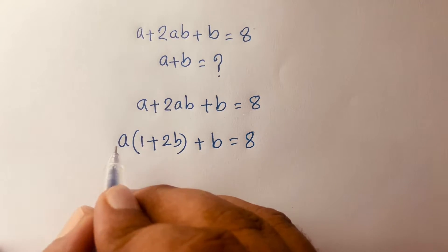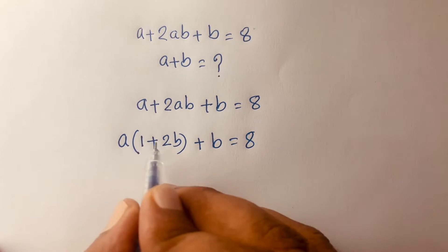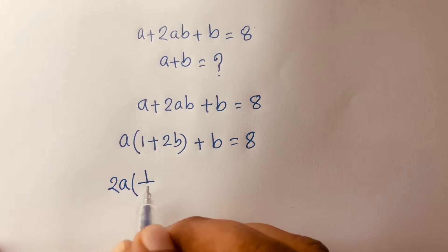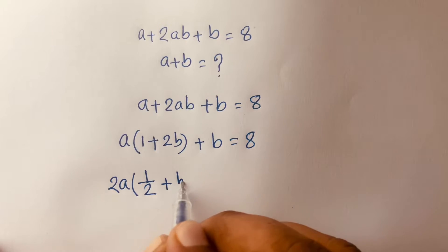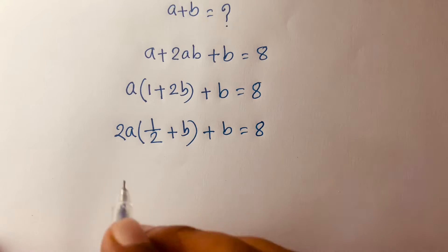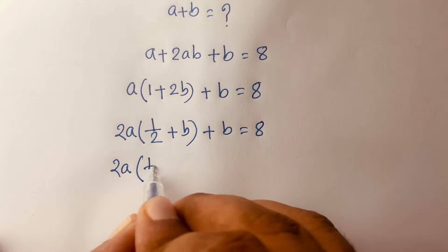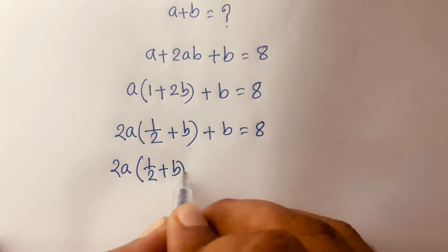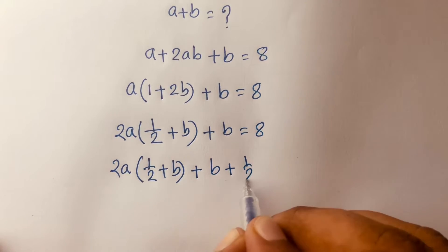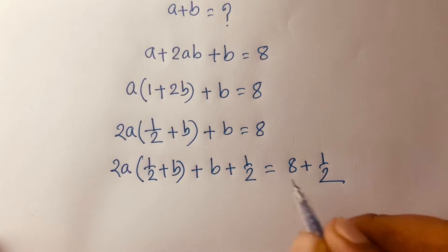Then I can see that 2 is common, so it will be 2 times [a times (1/2 plus b)] plus b is equal to 8. Then I add 1/2 to both sides: 2a times (1/2 plus b), plus b plus 1/2 is equal to 8 plus 1/2.